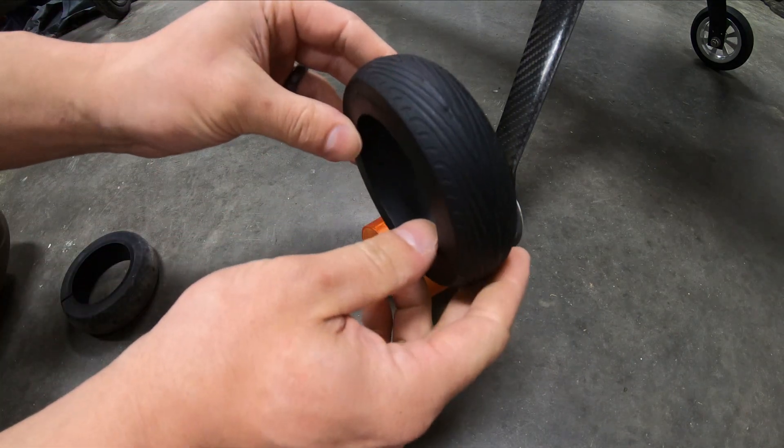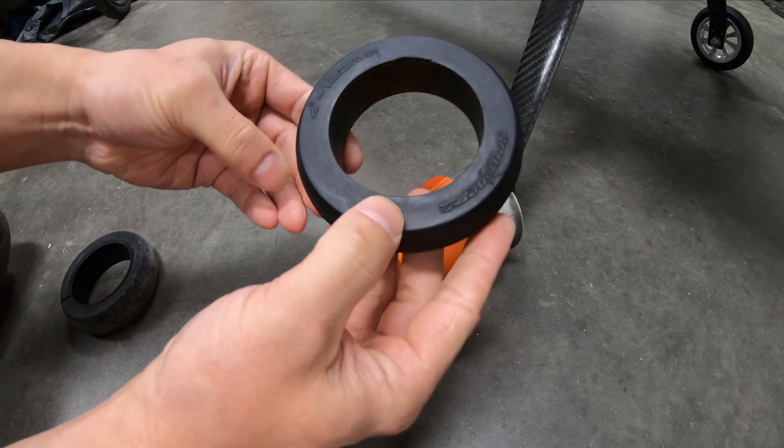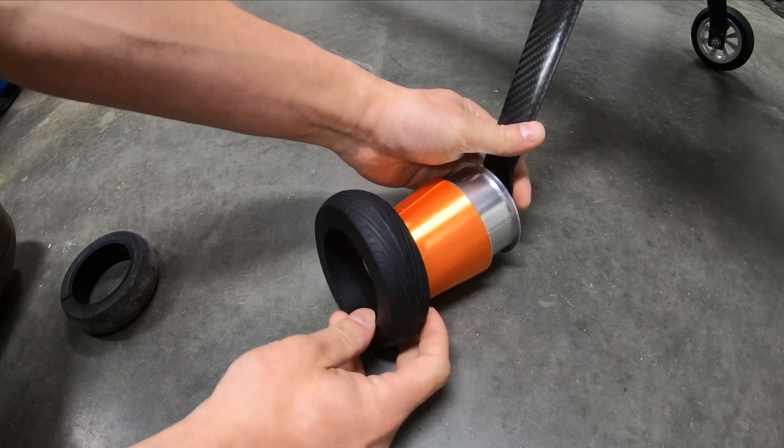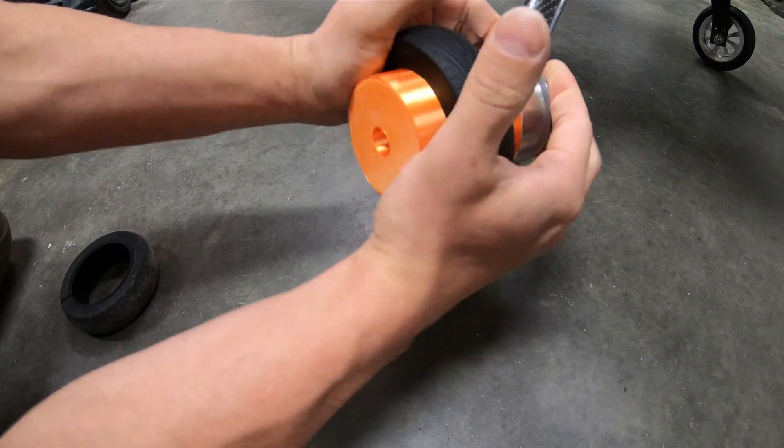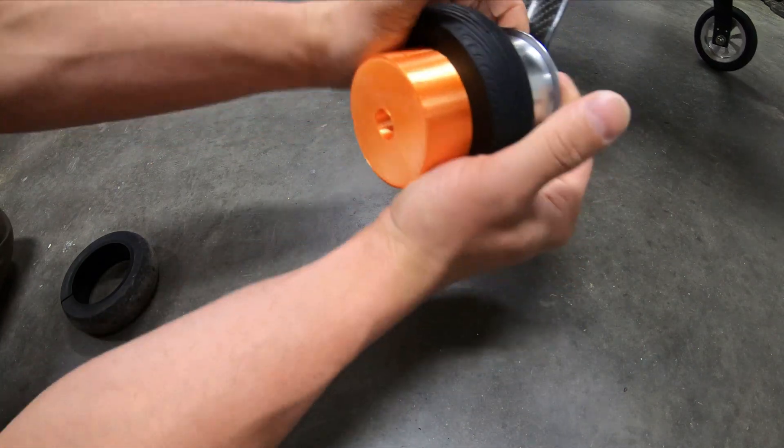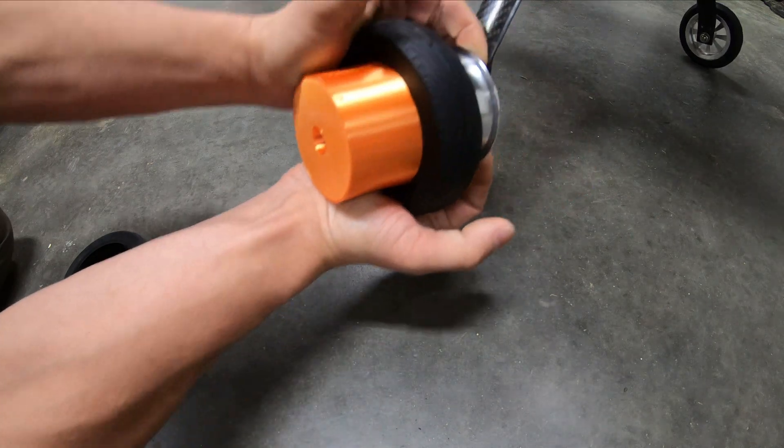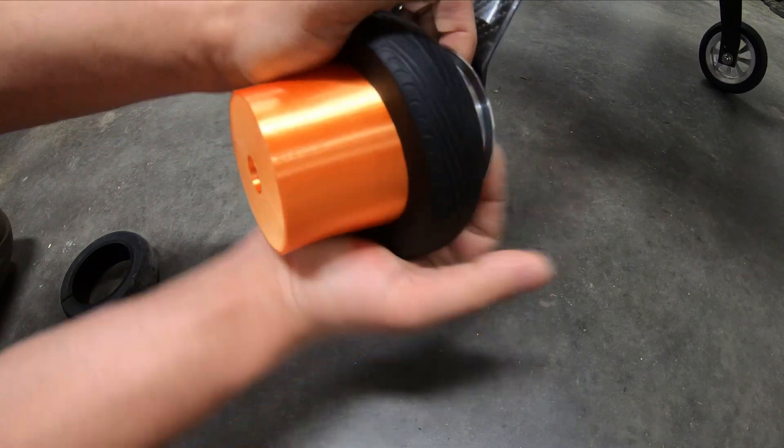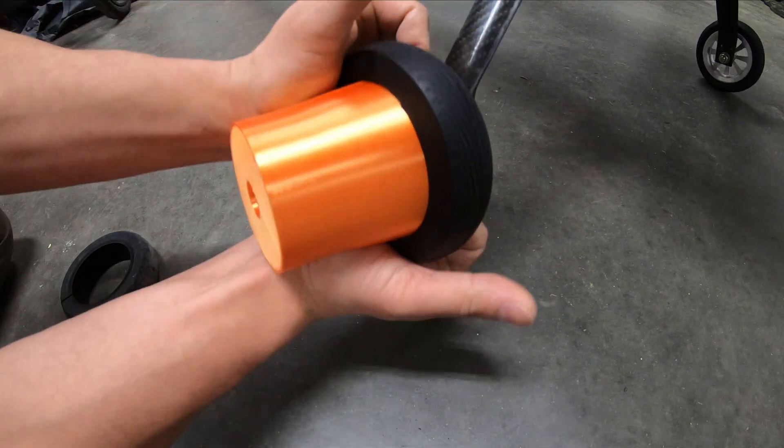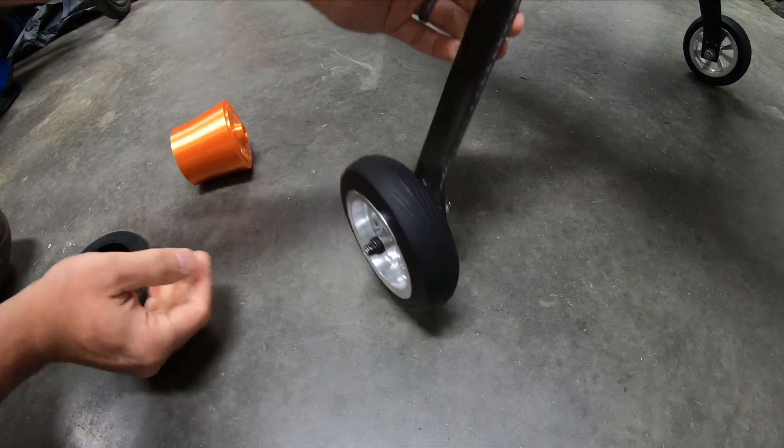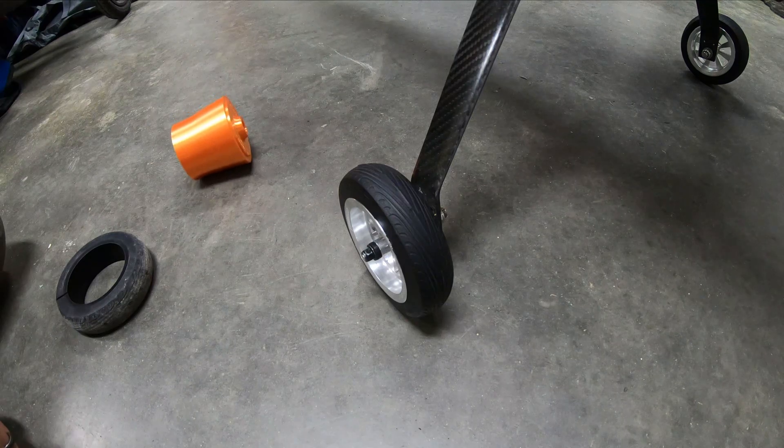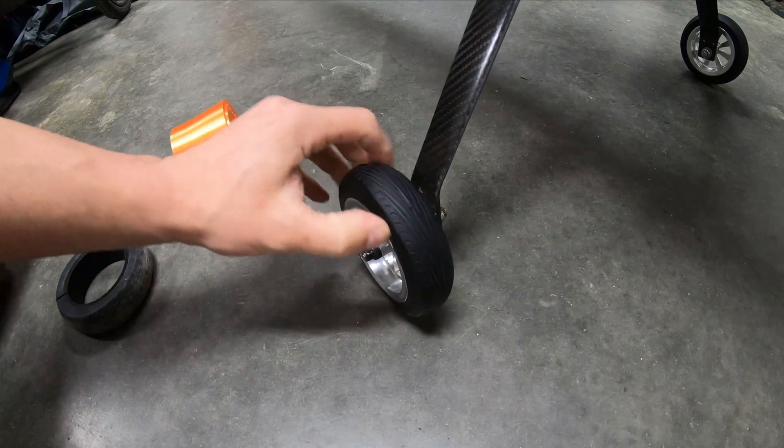Now, the other tire, we're going to slip it on like this. Kind of working around the edges. And that, my friends. That's how you do it. Nice and easy.